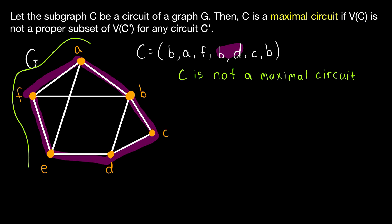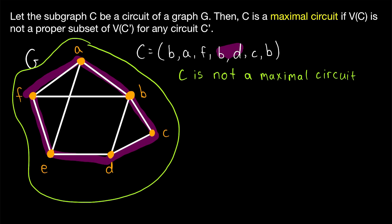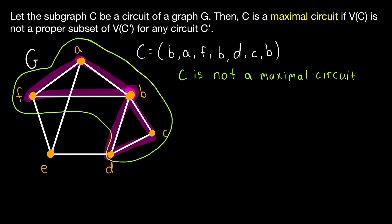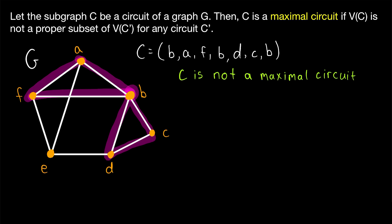By the way, what we've highlighted happens to be a cycle containing all vertices of G, so that is called a Hamilton cycle. Now, you or an author you're reading may want to consider maximal circuits with respect to edges. But in the papers I've seen, a maximal circuit has to do with the vertex set, not the edge set. If we were considering maximality with respect to the edge set, then circuit C would be maximal, because there is no circuit of G that contains all the edges C does and more.